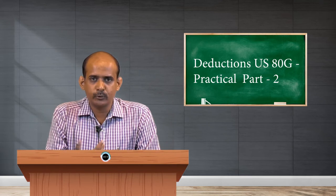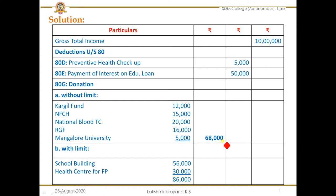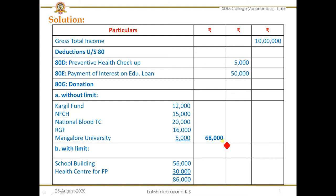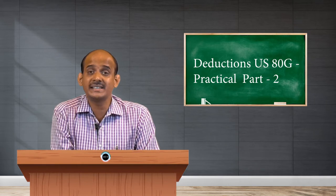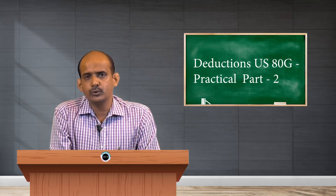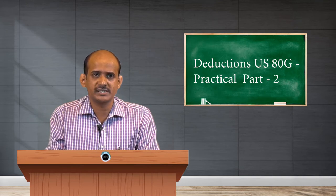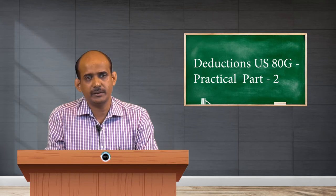After 80D, again before 80G, we have to check for any other applicable sections. As analyzed in the last video, there is one item suitable for deduction under section 80E, that is interest on education loan. Section 80E says any interest you pay on an education loan taken for yourself, your children, or your spouse is eligible for deduction. In this question, Akshaya Kanna has paid rupees 50,000 towards interest on education loan and rupees 50,000 towards principal. Only the interest paid is eligible, not the principal. So under 80E, we claim a deduction of rupees 50,000 for the education loan interest.